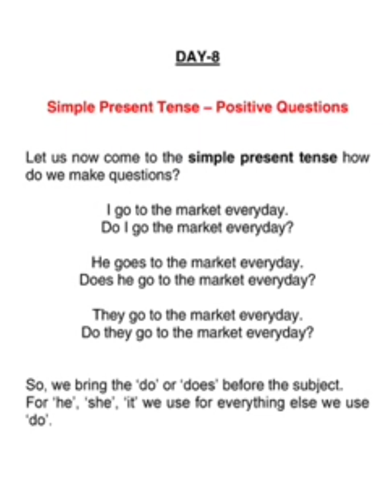Now we know that to make questions, we need a helping verb and we must bring it before the subject. Now for Simple Present Tense — that is for regular actions — we bring 'do' and 'does' before the subject. For he, she, it, and third person singulars, we bring 'does' before the subject. And for the rest — I, they, we, you — we bring 'do' before the subject.